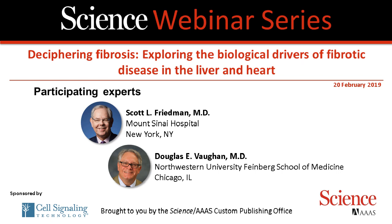Fibrotic diseases of the heart and liver impact a significant proportion of the global population and are a growing public health concern. Myocardiofibrosis is associated with nearly all forms of heart disease, and the pathological changes seen include cardiomyocyte hypertrophy, chamber dilation, heart valve stiffening, and others, all of which contribute to heart failure. Non-alcoholic steatohepatitis, or NASH, is a fatty liver disease characterized by hepatocyte inflammation that contributes to fibrosis, cirrhosis, and liver failure. NASH is closely linked to obesity and diabetes, and changes in diet have contributed to its expansion across the globe.